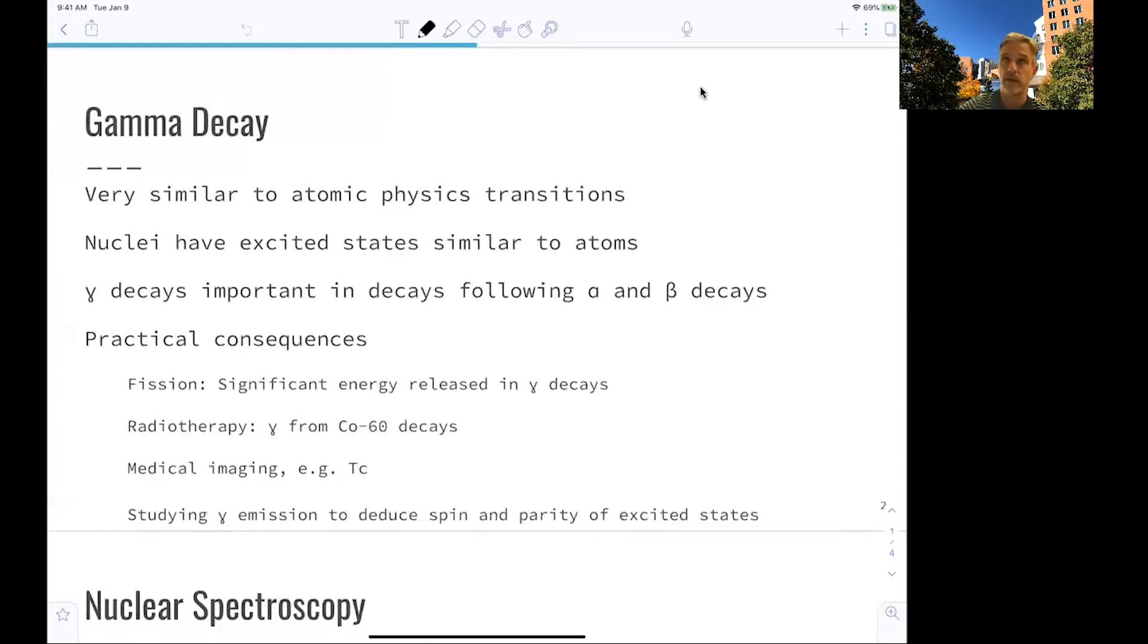If you go back very early to this lecture, we discussed the Wu experiment. And also there, we used gamma rays in order to reduce the spin and the parity of the states involved.